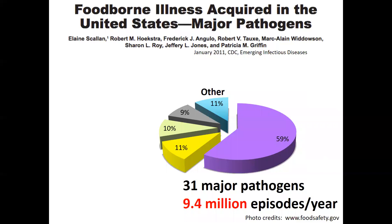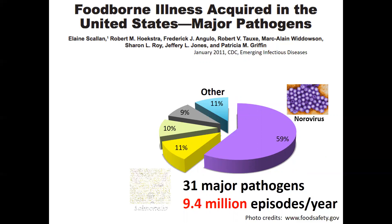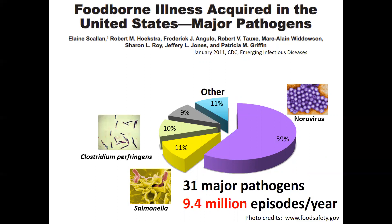There are 31 major pathogens that contribute significantly to foodborne illness in the United States. The leading cause of foodborne illness is norovirus, which contributes to over 59% of all foodborne illnesses in the United States. Salmonella, a bacteria, contributes to 11% of illnesses. Clostridium perfringens, another bacteria, contributes to 10% of illnesses. Campylobacter, yet another type of bacteria, constitutes 9% of illnesses.